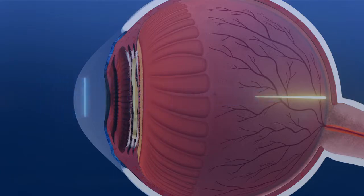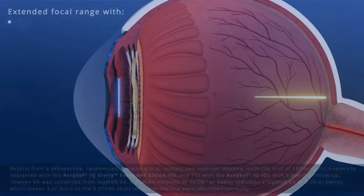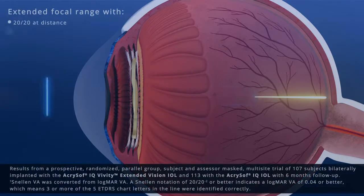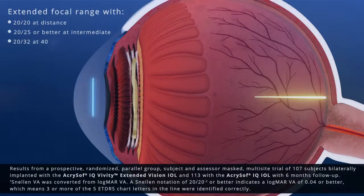The two smooth surface transition elements work simultaneously to stretch and shift the wavefront, creating an extended focal range, providing 20-20 at distance, 20-25 or better at intermediate, and 20-32 at 40 centimeters.